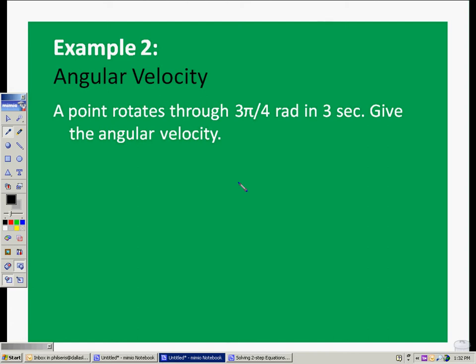In this example on angular velocity, we're looking at a point that rotates through 3 pi over 4 radians in 3 seconds, and we want to give the angular velocity.